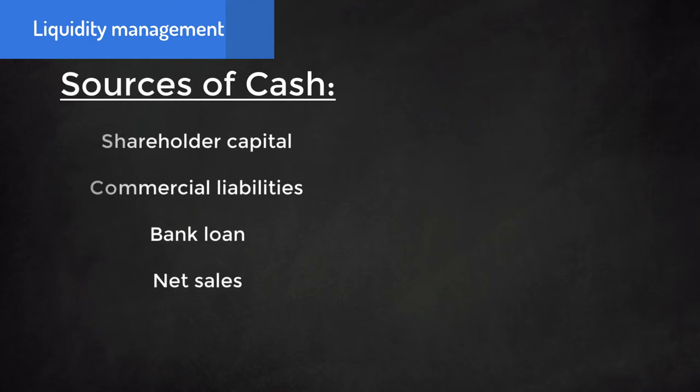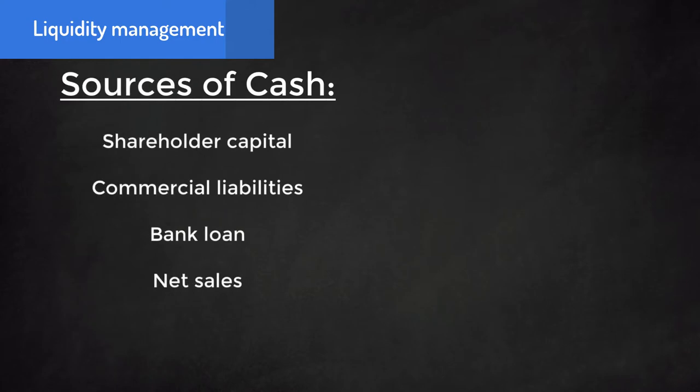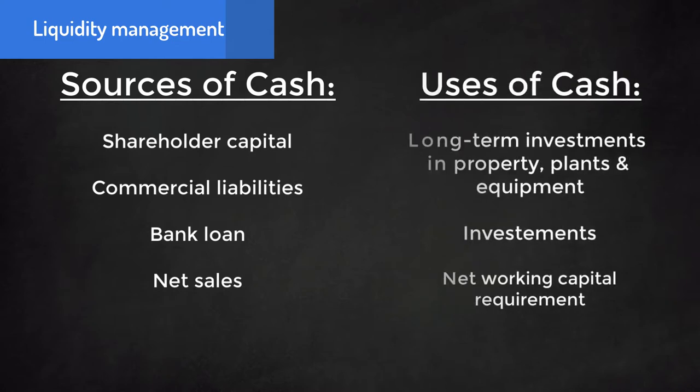The principles are simple. Sources of cash are shareholder capital, commercial liabilities, and bank loans, as well as cash derived from net sales. Uses of cash are long-term investments in property, plants and equipment, investment, and the net working capital requirement to finance the business cycle from production to sales.